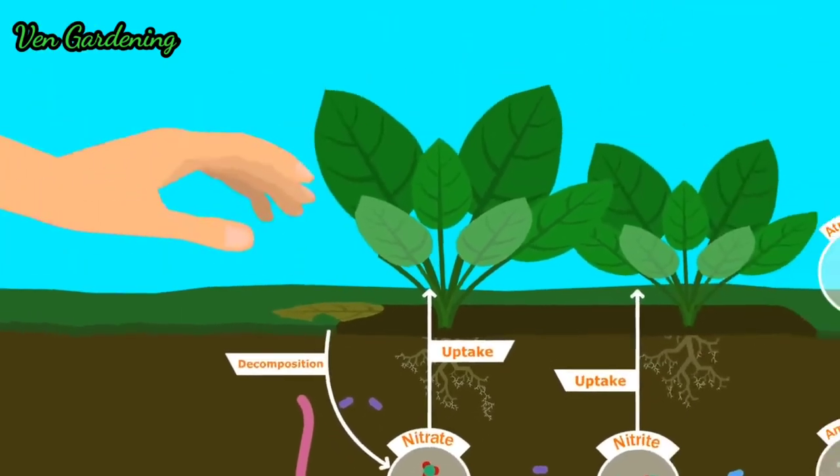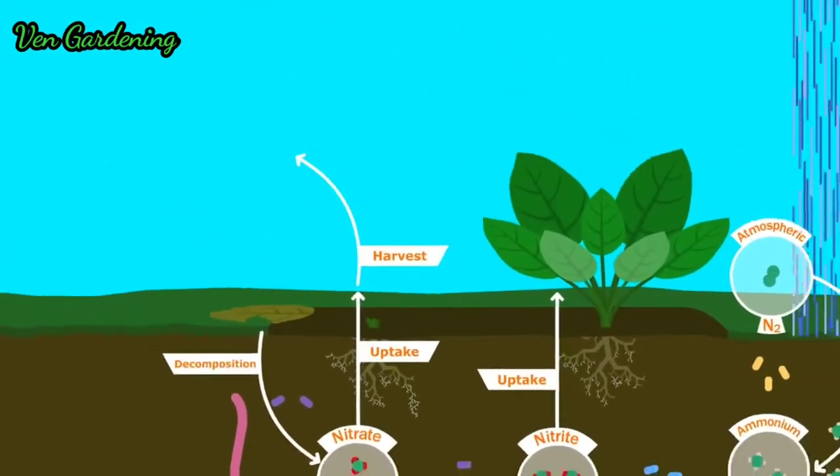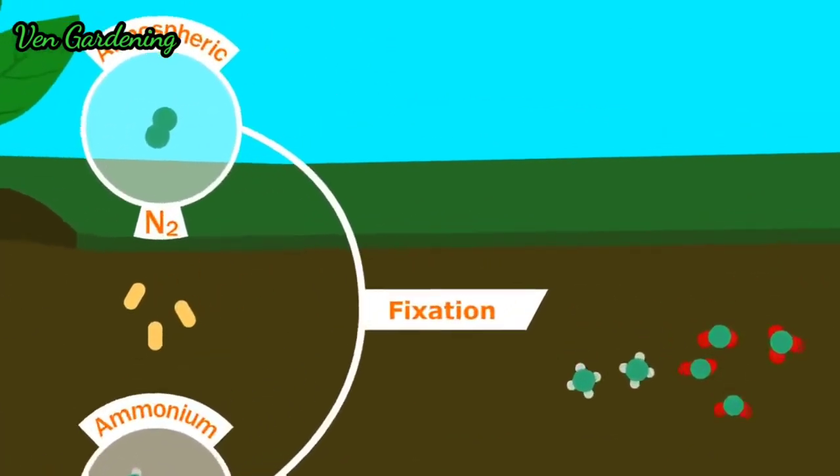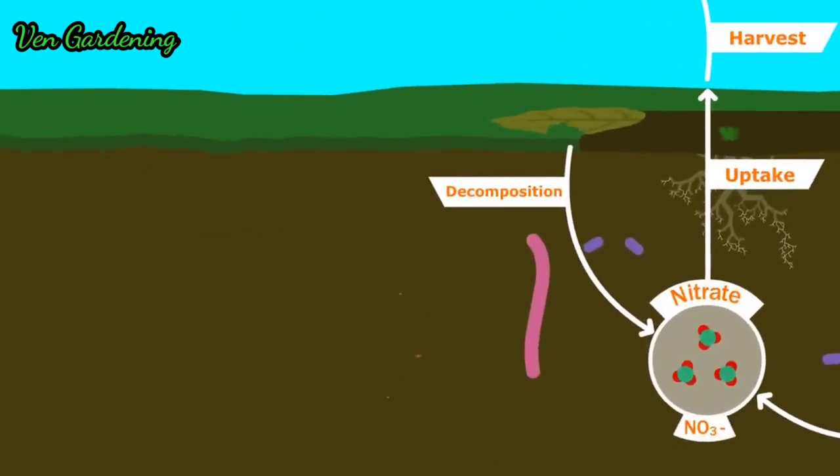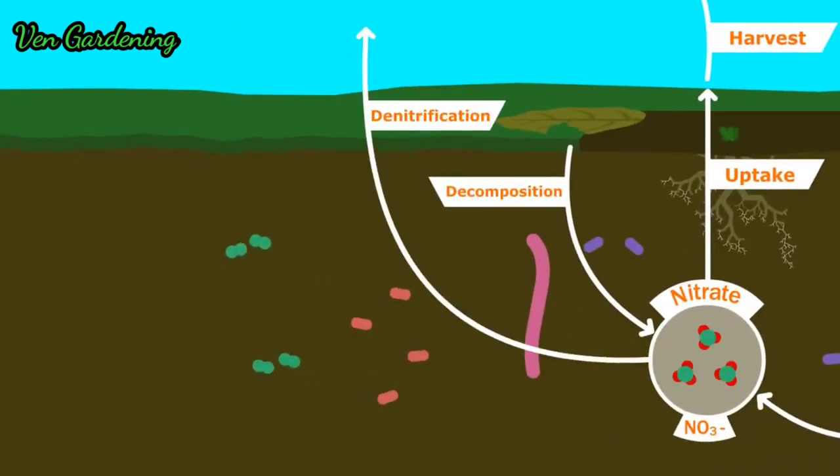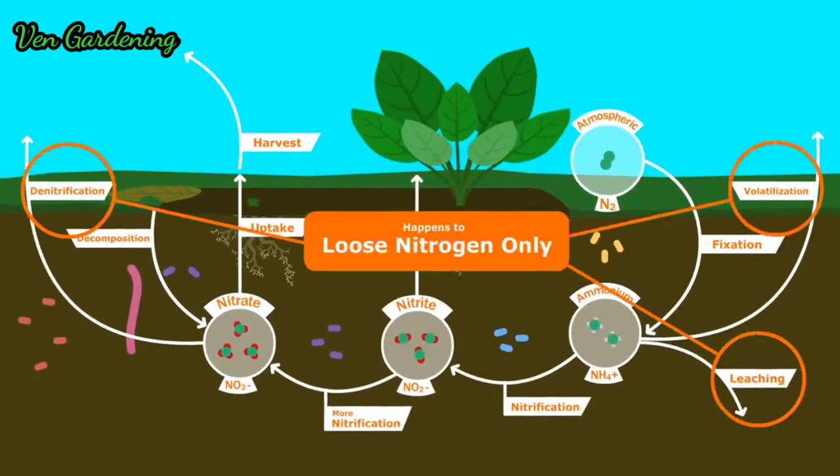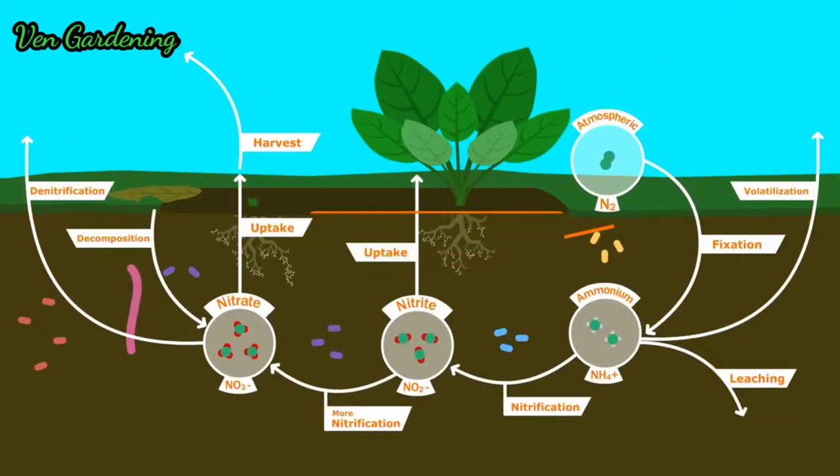Some of the ways nitrogen exits the soil is when the crop is harvested, when water carries it away, or when it becomes gaseous and returns to the atmosphere. Or, if the soil lacks oxygen, different, anaerobic bacteria grow, which convert nitrates back into atmospheric nitrogen. Notice that these things only happen with loose nitrogen in the soil, not with nitrogen inside organisms.